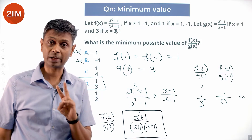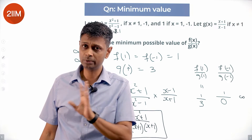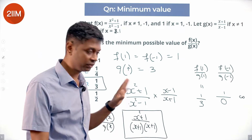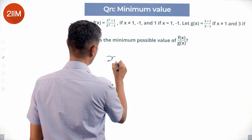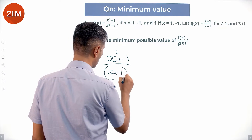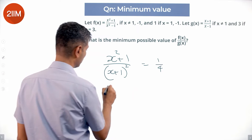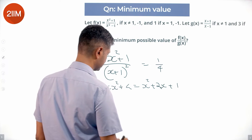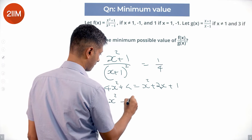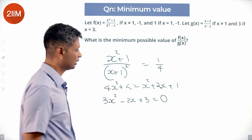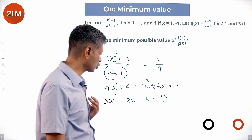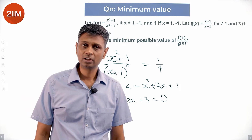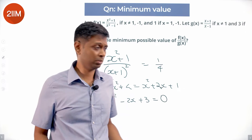It's either 1/3 or 1/4. The answer is not 1/2 and not -1 since the expression is positive. To test 1/4, I set (x² + 1)/(x + 1)² = 1/4, giving 4x² + 4 = x² + 2x + 2x + 1, or 3x² - 2x + 3 = 0. If this equation has roots, then 1/4 is achievable.